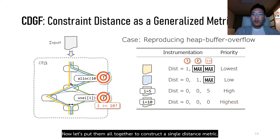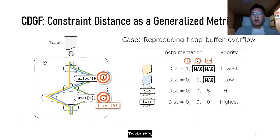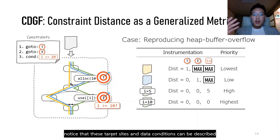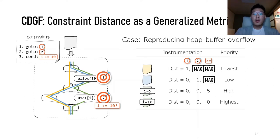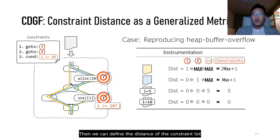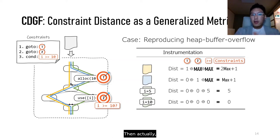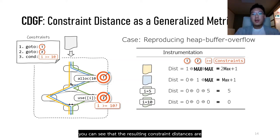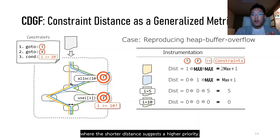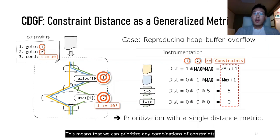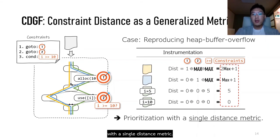Now let's put it all together to construct a single distance metric. Notice that the target sites and data conditions can be described as a list of constraints. You can define the distance of this constraint list by summing up the distances from each sub-constraint. The resulting constraint distances correspond exactly to the correct priority order, where a shorter distance suggests a higher priority. This means we can prioritize any combination of constraints with a single distance metric.